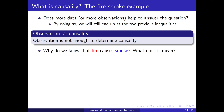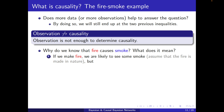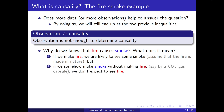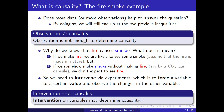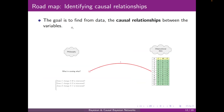So where does the information come from that fire is causing smoke? The key is experiment. If we make fire, we are likely to see smoke. But if we somehow make smoke without making fire — say by a CO gas capsule — we don't expect to see fire. We need to intervene via experiments, which means forcing a variable to a certain value and then observing changes in the other variable. The message is: intervention on variables may determine causality.